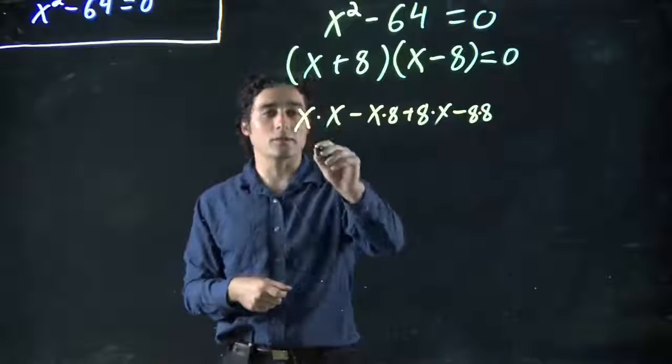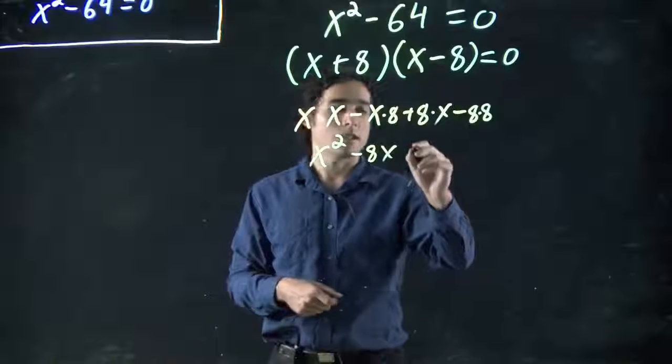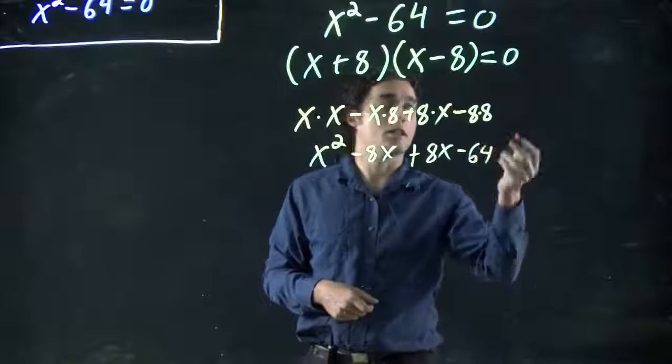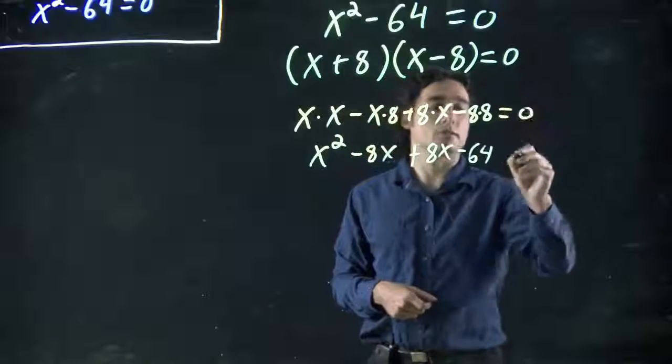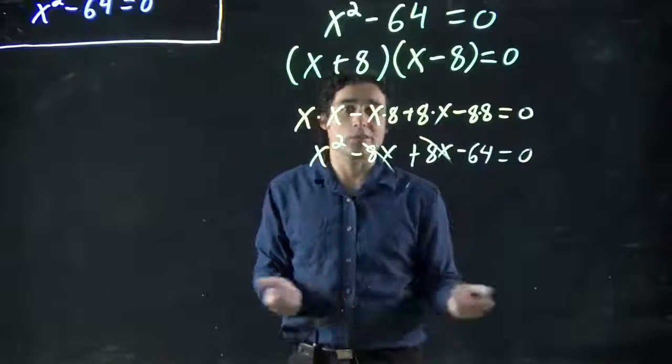Well the thing is, this becomes x squared. And then what we have here is minus 8x plus 8x minus 64. And I've been forgetting to set this all equal to zero. Well look, minus 8x plus 8x cancels. It becomes zero.